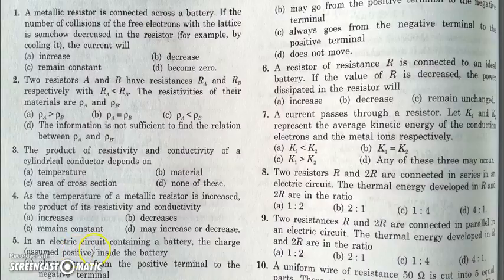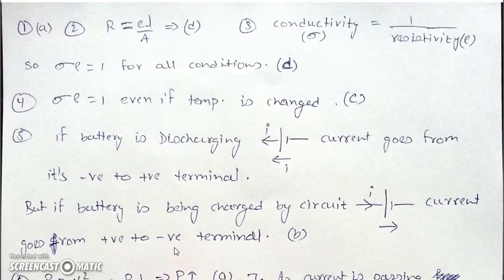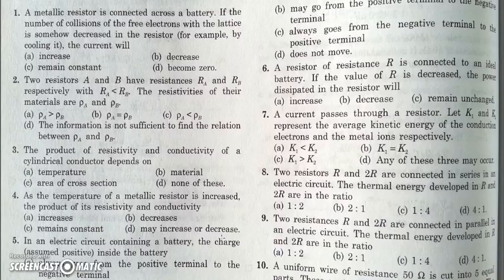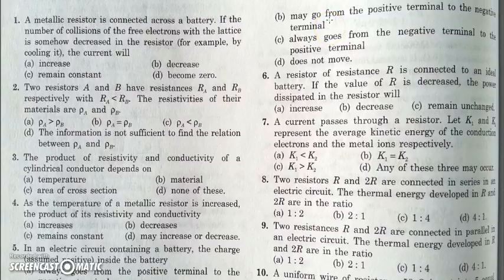In the fifth question, a battery is connected in an electric circuit and we need to find how charge flows inside the battery. It depends on whether the battery is charging or discharging. If discharging, current comes out from the positive terminal and moves from negative to positive inside. If the battery is being charged, current flows into the positive terminal and moves from positive to negative inside. So we go with: current may flow from positive to negative terminal — 'always' and 'must' should be avoided.